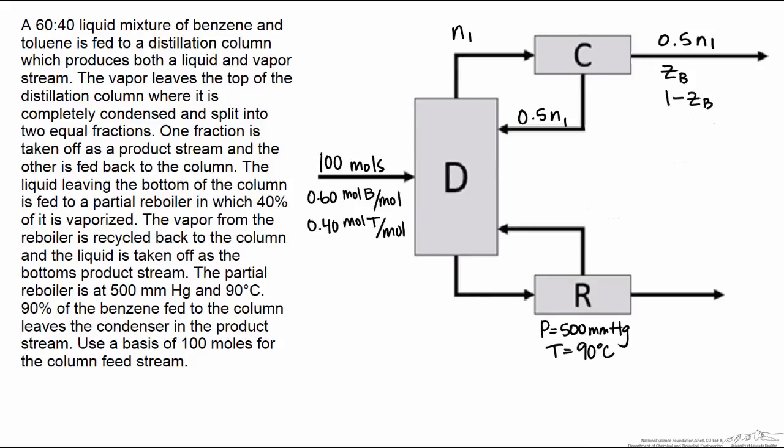Next we'll look at the stream, the liquid stream leaving the bottom of the column, and we'll call this N2, and again we know nothing about its composition, so we'll call it W sub B and 1 minus W sub B.